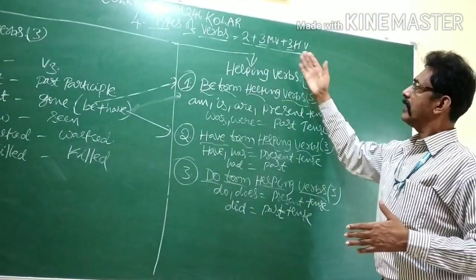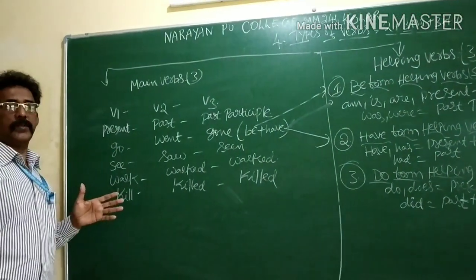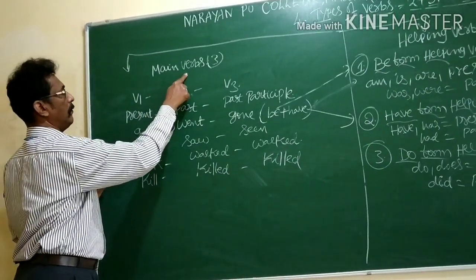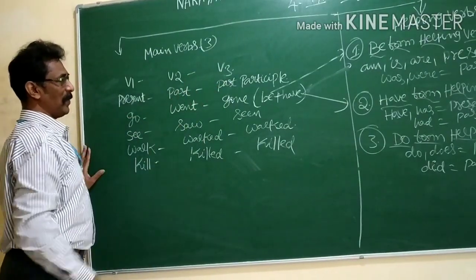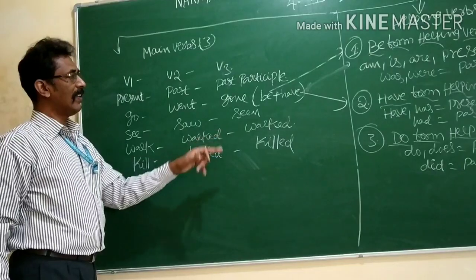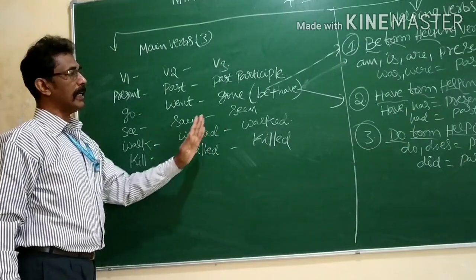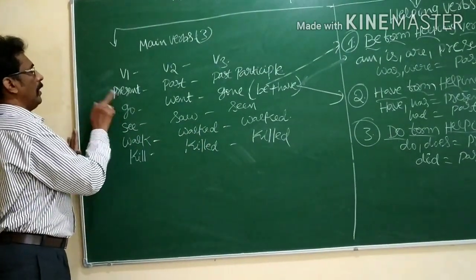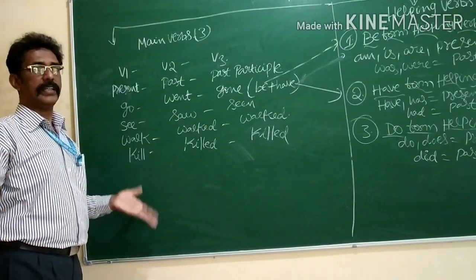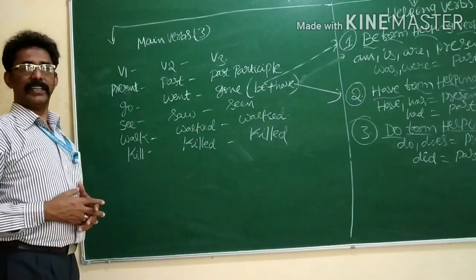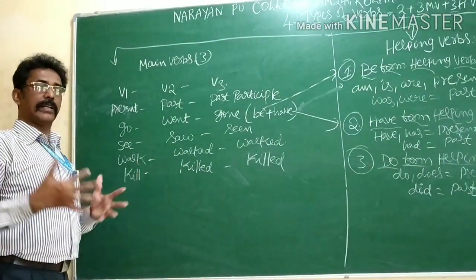What are main verbs? Types of main verbs are three: V1, V2, V3 — present, past, and past participle. This is the game changer. V1, V2, V3: present, past, and past participle. Future tense means will plus V1. Present, past, past participle — that's enough. You don't have to memorize anything. If you can learn this concept, you are entering into first PUC exactly. Today onwards, you are my first PUC real stars.